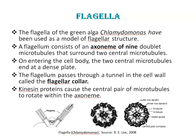Next is flagella. The flagella of the green alga Chlamydomonas have been used as a model of flagellar structure. A flagellum consists of an axoneme of 9 doublet microtubules that surround 2 central microtubules, with all the microtubules encased in the plasma membrane. On entering the cell body, the 2 central microtubules end at the dense plate, whereas the 9 peripheral doublets continue into the cell, usually picking up an additional structure that transforms them into triplets. Kinesin proteins cause the central pair of microtubules to rotate within the axoneme.